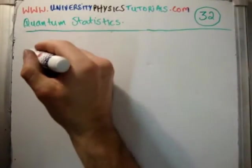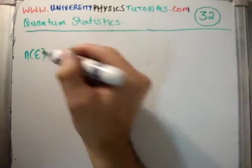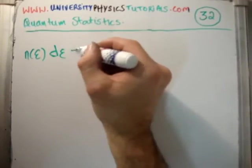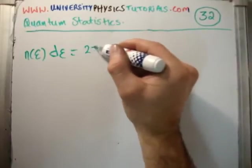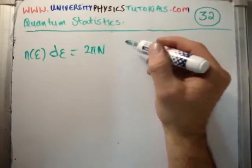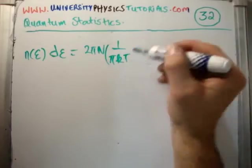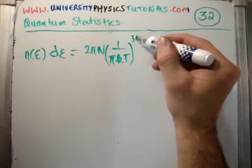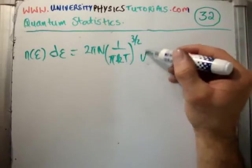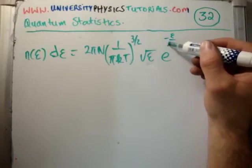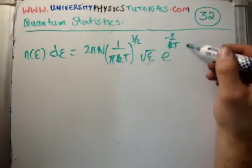Okay, so let's go ahead and do that. It is only a small bit of algebra, so we get the number of particles with energy epsilon, d epsilon, is equal to twice pi n, 1 over pi kt, to the 3 divided by 2 root epsilon. We have, then, the Boltzmann factor, e to the minus epsilon over kt, and then we have d epsilon.